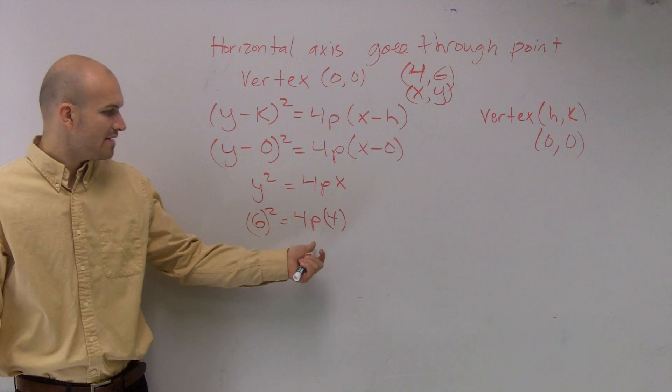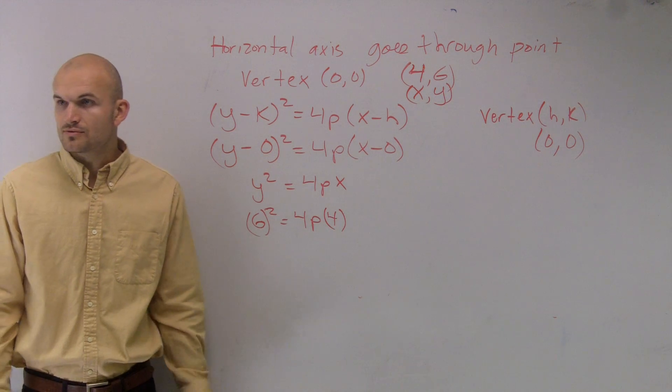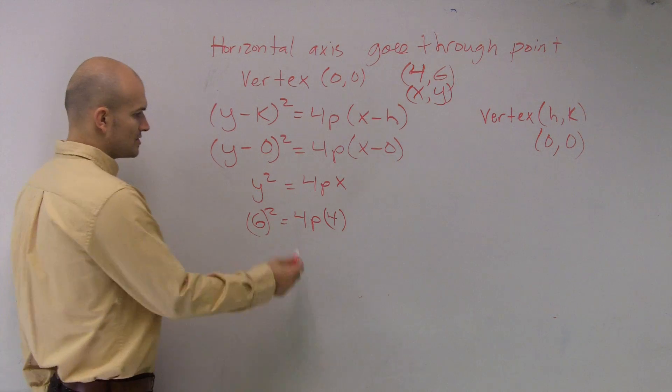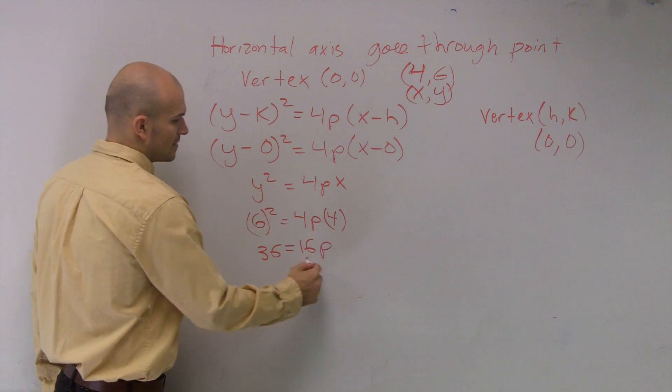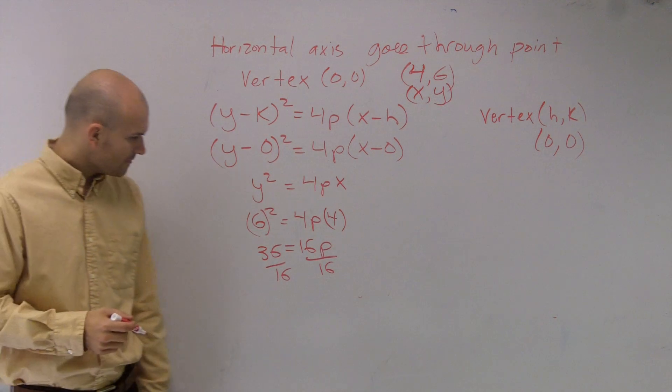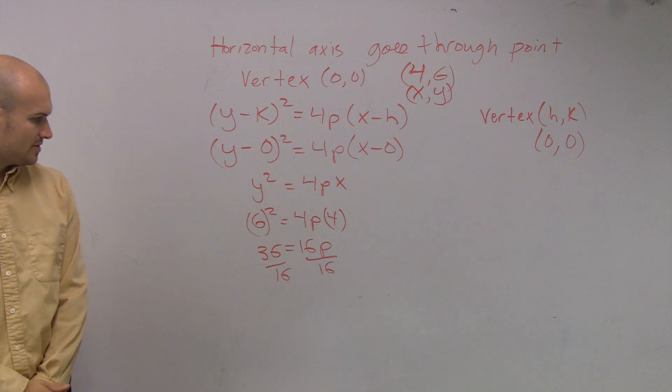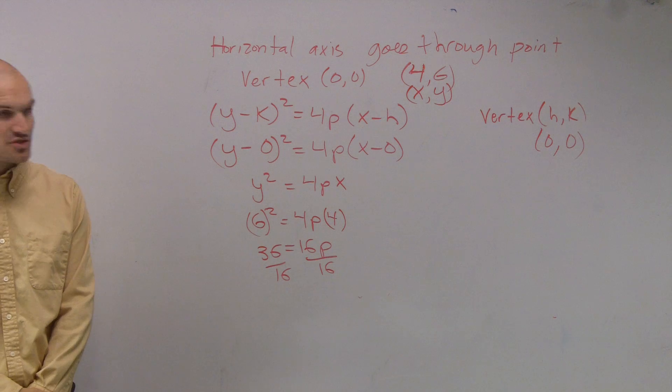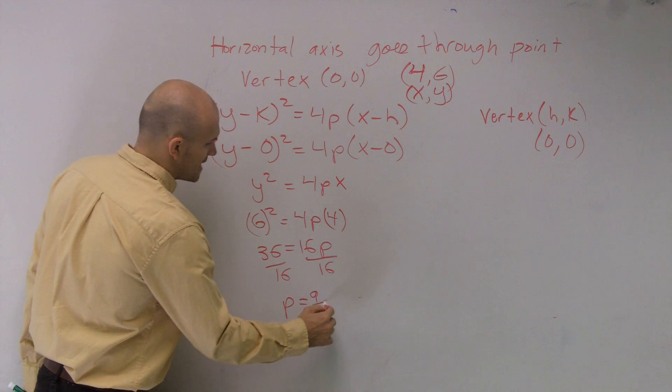So I plug now in my point. So now you guys can see what I have is I'm missing a variable that I have to figure out, which is p. So what I'll do is I'll get 36 = 16p. Divide by 16. We got 4 goes in the top, 9 fourths. So we can say p = 9/4. Good job.